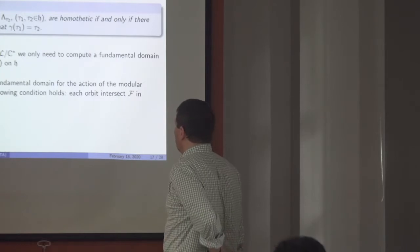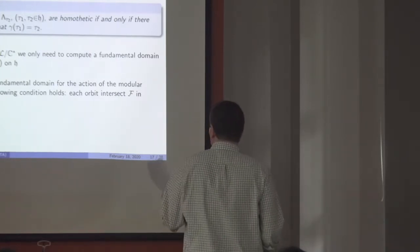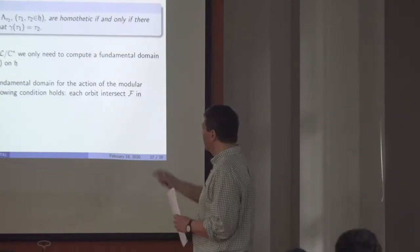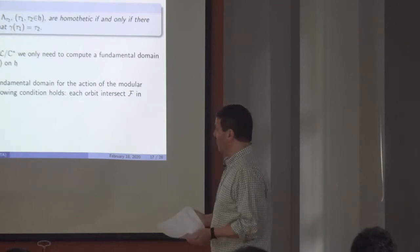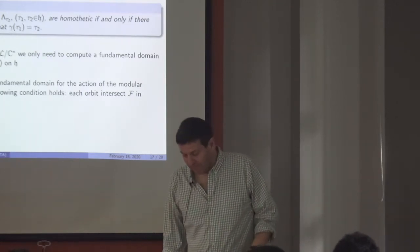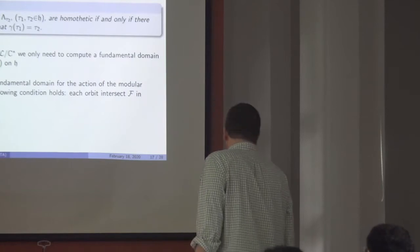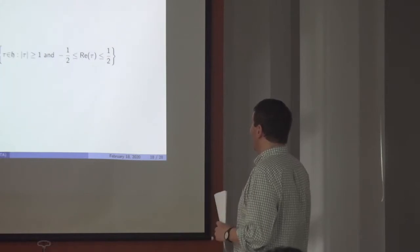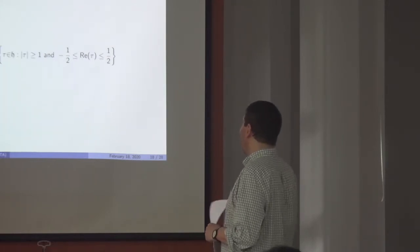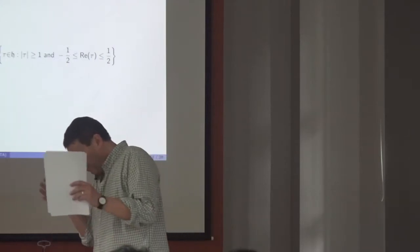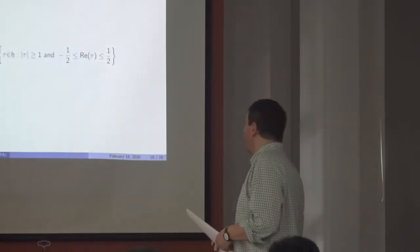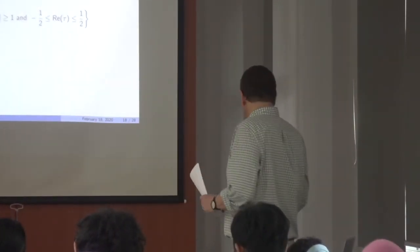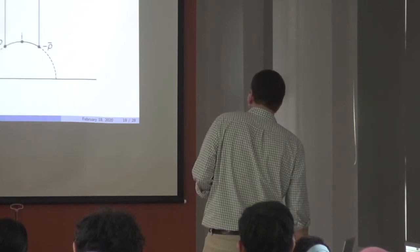This tells us: to understand script Λ / C* we only need to compute a fundamental domain for the action of Γ₁ on the upper half-plane ℍ. A natural candidate is F̃ = {τ ∈ ℍ : |τ| ≥ 1 and −1/2 ≤ Re(τ) ≤ 1/2}. Let's see why this is a good candidate and how it looks.